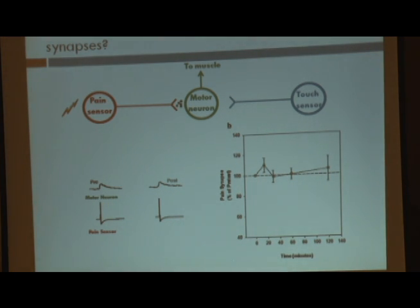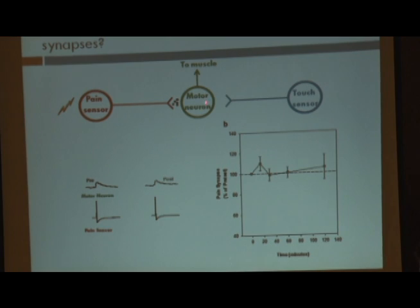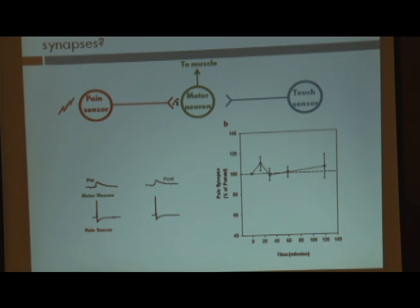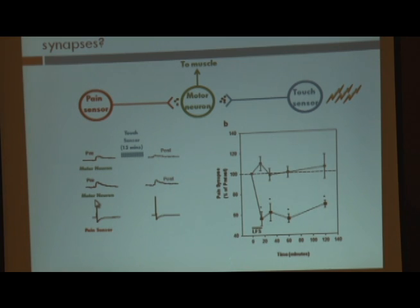One of the first things we wanted to look at was the gate control process at the synaptic level in the leech. If you activate a pain sensory cell — this is what the electrical activation looks like — that causes the release of neurochemical transmitters that produce an electrical response in the target cell, in this case a motor neuron. If we test this synaptic connection over a period of time, it stays relatively stable. But if we drive a touch sensory cell repetitively, like you would use for a TENS unit, for 15 minutes, you get a reduction in that synaptic communication — about a 50% reduction — and it lasts for at least two hours, maybe longer.